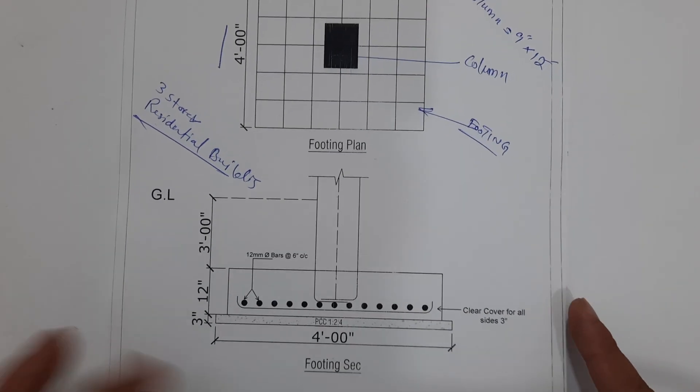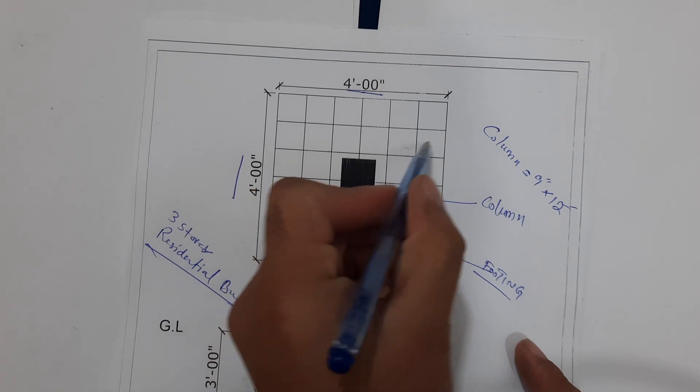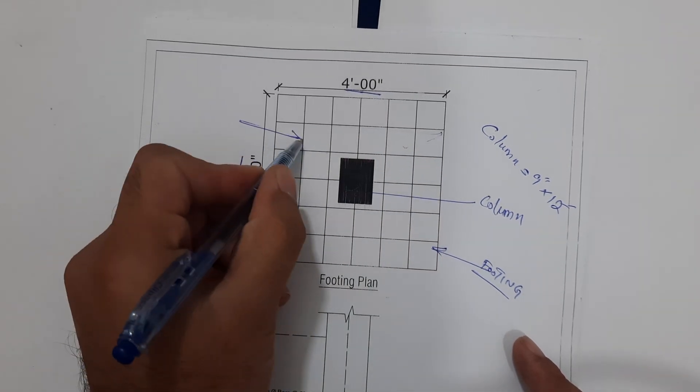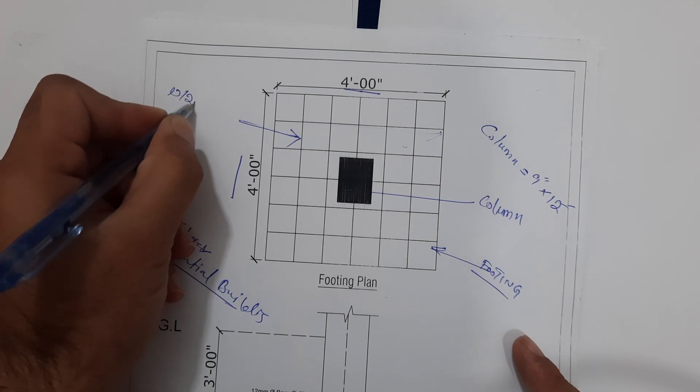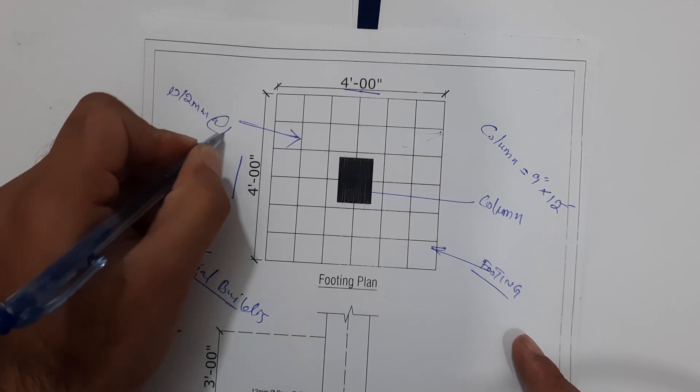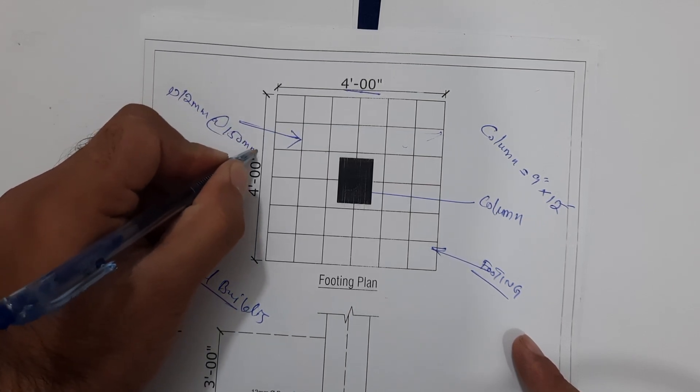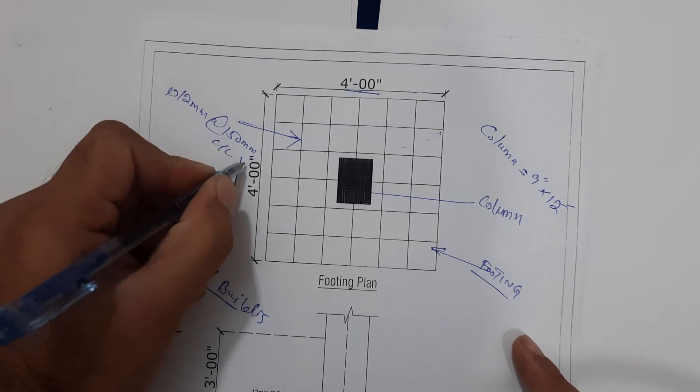Now you can see the steel reinforcement. As you can see in the plan of this footing, we have here 12 millimeter diameter steel rod with the spacing of 150mm center to center, or you can say 6 inches center to center distance.